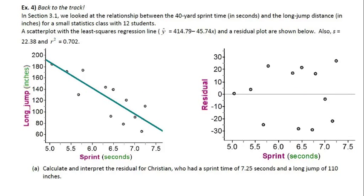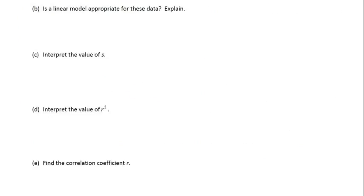I'm going to stop right here. Example 4, I'm going to leave to you. When I check to make sure you did these notes, I'll check that you completed Example 4. Everything on there we've already done — the only new piece would be part D, which says interpret the value of R-squared. I already gave you the model to use; you just need to replace it with the variables and the correct R-squared value. We'll regroup tomorrow and take a look at this problem. That's all for these — I'll see you in class.